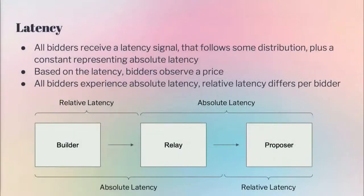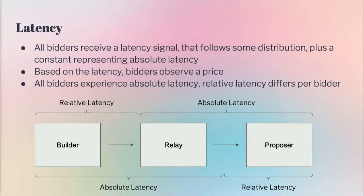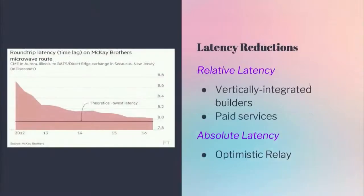We'll define two separate forms of latency. All bidders receive a latency signal that's private to them, following some distribution identical for all bidders. Based on this latency, they'll observe their price. We distinguish between absolute latency and relative latency. For example, the portion from builder to relay could be relative latency, and the part from relay to proposer is absolute latency — which might be true in an MEV Boost model. Or you could replace relays with a P2P network for enshrined PBS. Currently we're seeing a lot of latency reductions, such as vertically integrated builders, which is a big topic at this conference. These are more relative latency reductions. The optimistic relay, for example, reduces load on the relay as an absolute latency reduction, giving everyone the same access.